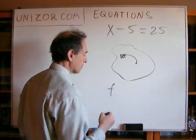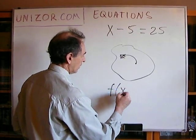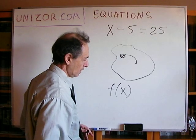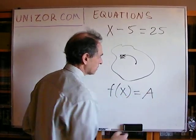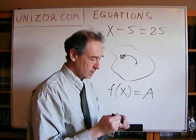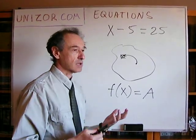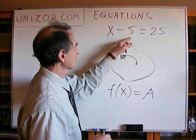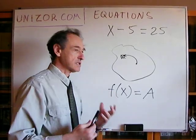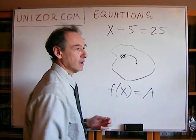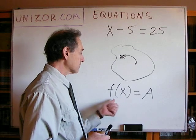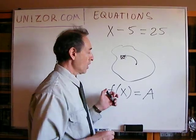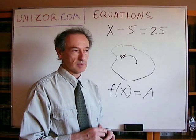So basically, you can say that an equation is something like this: you have a certain operation — I'll use the letter F, like a function — of some unknown element of a certain set. In this particular case, it's a set of real numbers. And you know that the result of this operation is a certain known element. In this case it's 25. So, the function F — or operation, unary operation — which has only one particular argument, is subtraction of 5.